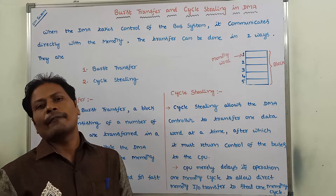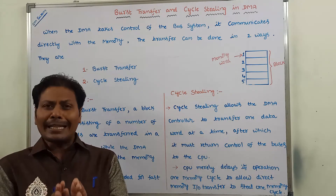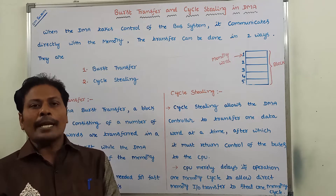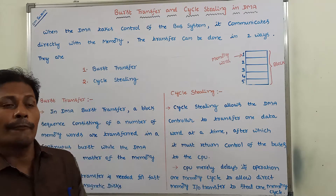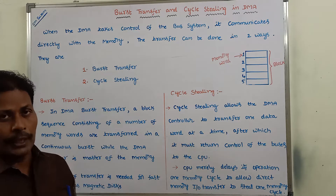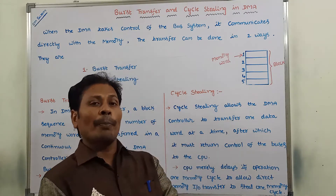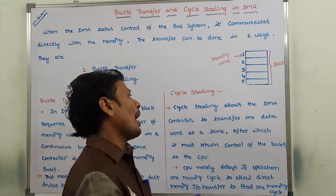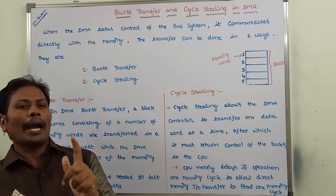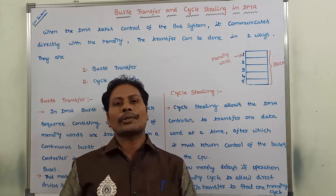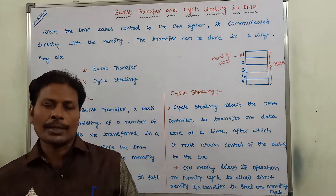In burst transfer, all the memory words within a single block can be transferred at a time. To transfer the entire block from the IO peripheral device to the main memory while the DMA controller holds control of the buses, we use burst transfer. To transfer only one memory word at a time, we use cycle stealing.